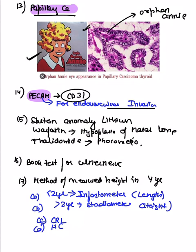A match-the-following teratogen question: lithium causes Ebstein's anomaly. Warfarin causes depressed nasal bridge — hypoplasia of the nasal bridge. Thalidomide has been banned because it causes phocomelia.